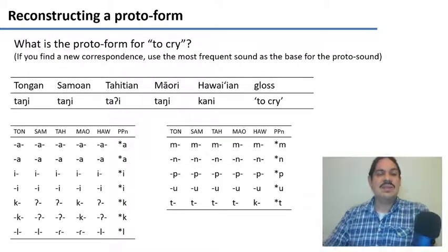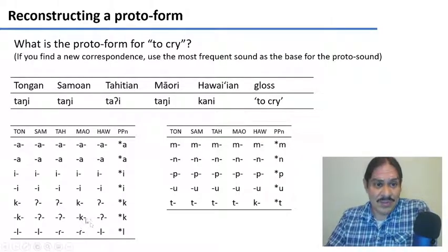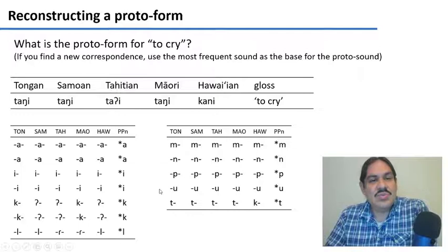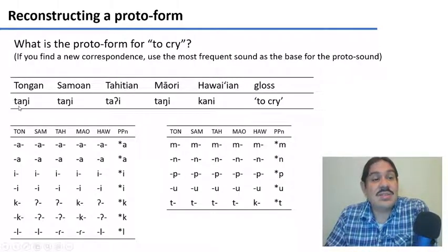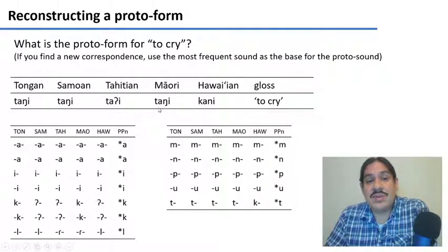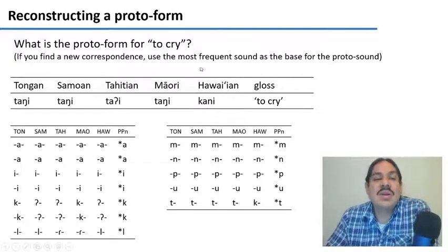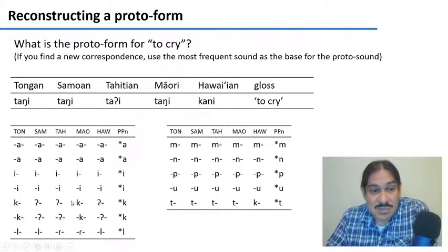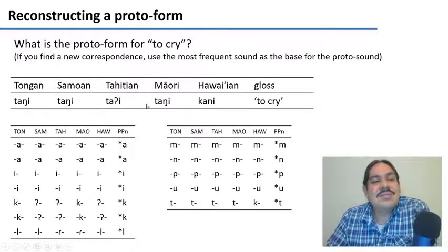So these are the sound correspondences that we have been able to find so far. Could you try to figure out the proto-form for cry, for the verb to cry? As you can see here, in Tongan it's pronounced Tani, Tani in Samoan, Tai in Tahitian, Tani in Te Reo Maori from Aotearoa New Zealand, and Kani in Hawaiian. Try to figure out what the sound correspondences are — maybe we already have all the ones we need. Figure out the correspondences and then try to reconstruct a proto-form for 'to cry.'